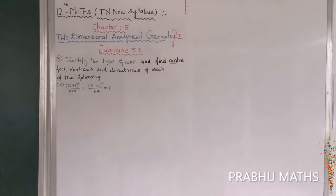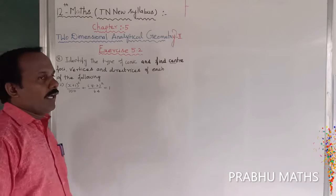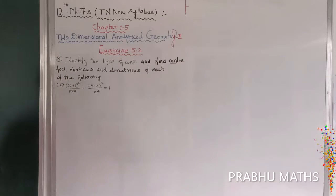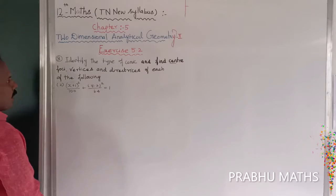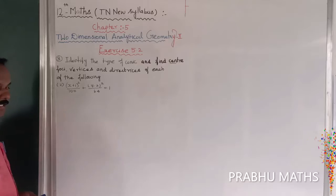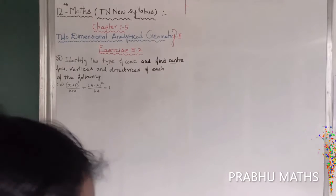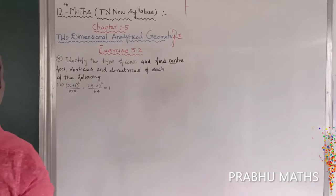x is 5.2, 8 is some 2nd subdivision. Identify the type of the conic, find the center, next find the key, vertices, and directrices in each of the following cases. First of all, the given value is to convert the general form.